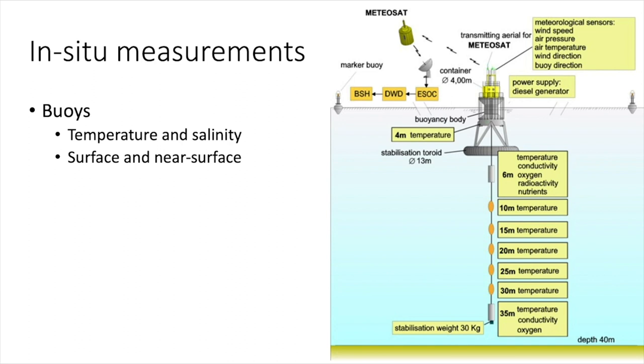You can also take in-situ measurements of water using things like buoys. So these buoys can either be anchored or they can be free floating. In the buoy shown in the picture on the right, you can see that it actually has its own power supply. It's a diesel generator and it's floating and it can take various measurements at different depths. So in this particular one, it's taking temperature at 4 meters, 6 meters, 10 meters, 15 meters, 20 meters on down to the bottom at 35 meters. But it's also taking meteorological measurements. So wind speed, air pressure, air temperature, wind direction. And so it's taking all of these measurements and it can then transmit those measurements to a satellite that collects that data and then sends it back to scientists to process that data.